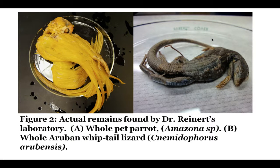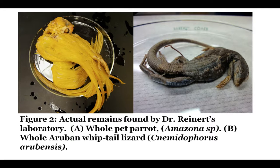Over here it ate a whole Aruban whiptail lizard. Now if you remember, what else normally eats the Aruban whiptail lizard? The native Aruban island rattlesnake. So now that native species has to compete with the boa constrictor for the food that it normally eats. That is not good for the Aruban island rattlesnake, because the constrictor has no predators — nothing is eating it.